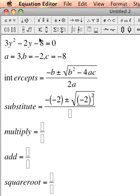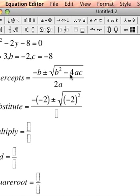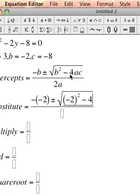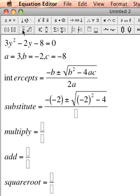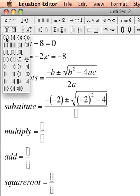And make sure your exponent is outside of the parentheses. Remember, I'm replacing b with negative 2, I'm not replacing b squared with negative 2. The negative 4 here hasn't changed, so I'm still going to type in negative 4. I'm going to replace a with 3.